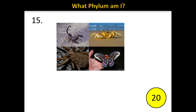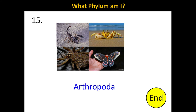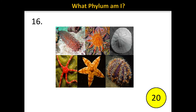Number 15. The correct answer is Arthropoda. Remember, 'poda' means feet and arthropods have many feet or many appendages. Examples include spiders, insects, crabs, and scorpions. They are unique in that they have an exoskeleton surrounding their body as well as many jointed appendages.